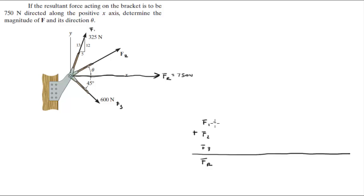So you got F1, F2, F3, and FR. You know that the addition of these three forces is equal to FR which is 750i plus 0j.